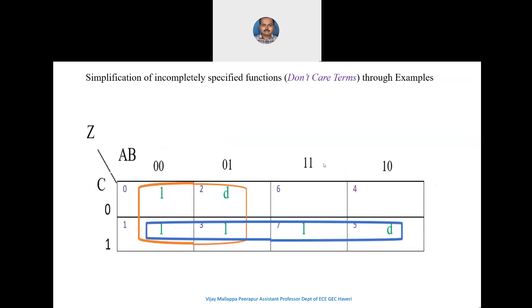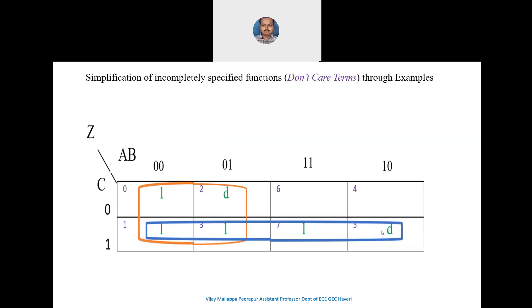The D terms help us create larger groups of minterms. The simplified expression for this example is: z = ā + c.